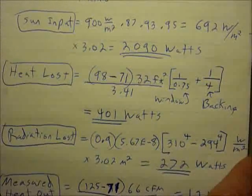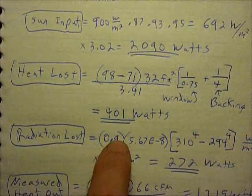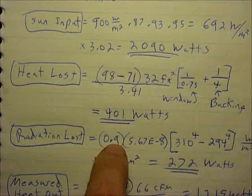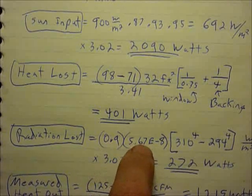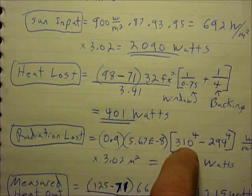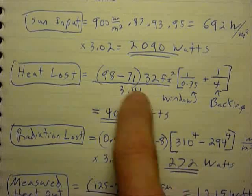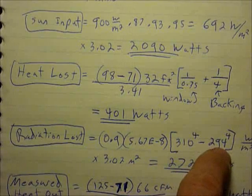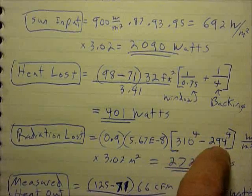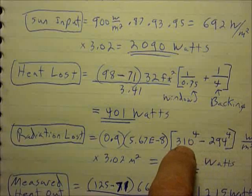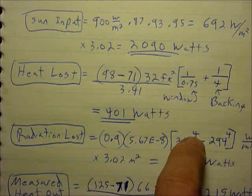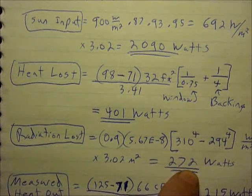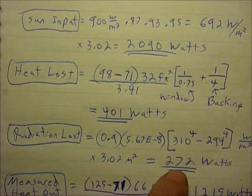Radiation loss: the black surface or most any normal surface has approximately 0.9 or 90% efficiency in radiating heat as a black body. This is a constant for kelvins. This 310 is the 98 in terms of kelvins and this is the 71 degrees Fahrenheit ambient in terms of kelvins. This difference between ambient and the inside of black box makes a very big difference because it's raised to the fourth power. In this case with ambient fairly high it wasn't too bad, so times the 3.02 meters for the box.